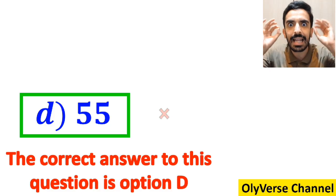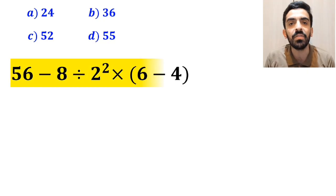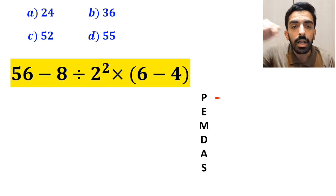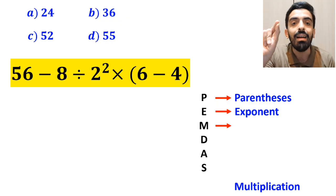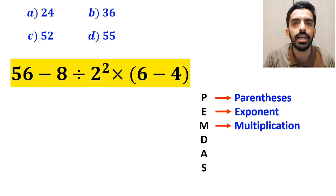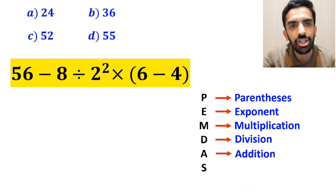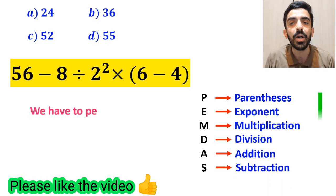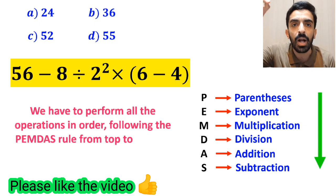However, this answer is absolutely wrong. Now, let me show you how to solve this expression properly. To solve this problem, we must follow the PEMDAS rule. P stands for parenthesis, E stands for exponent, M stands for multiplication, D stands for division, A stands for addition, and S stands for subtraction. It means that we have to perform all the operations in order, following PEMDAS from top to bottom.